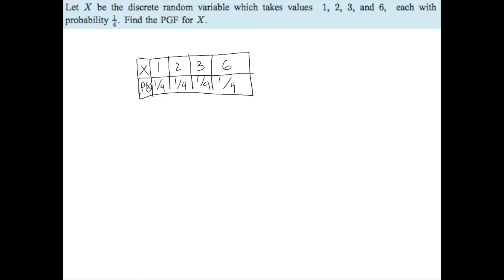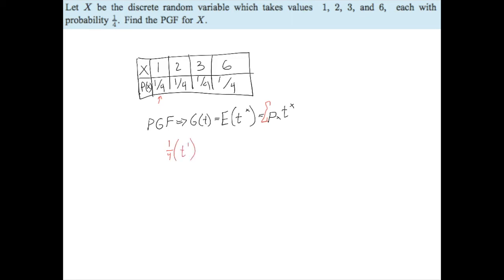The question asks us to find the PGF for X. Remember, the PGF is g(t) = E[t^X]. To set that up, the expected value is the summation of the probability of a specific value times t to that x value. So for the first value, that's one quarter times t to the power of 1.